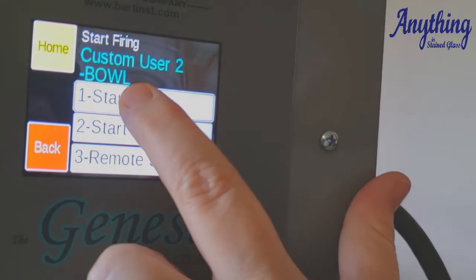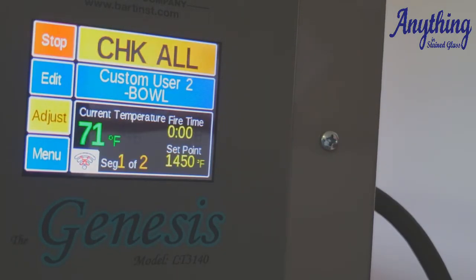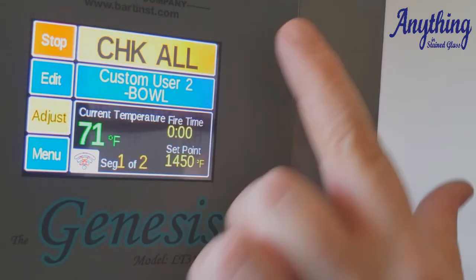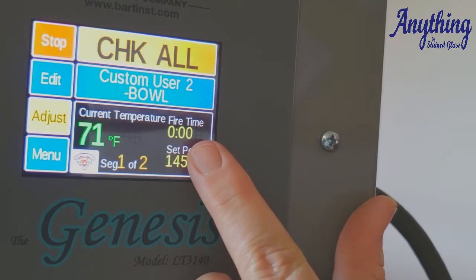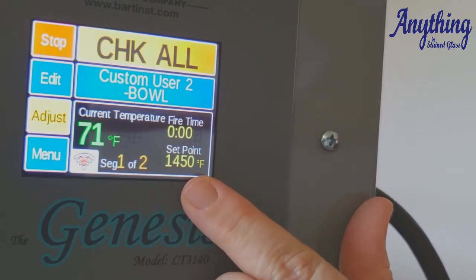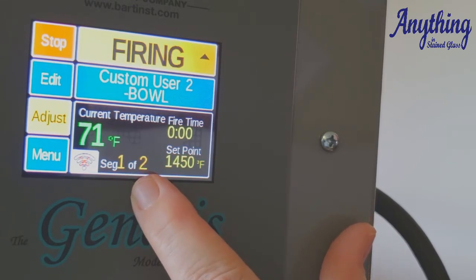Again, basic lockout from the factory is number 1. Now, down here, after it checks everything, down here, you can see what your current temperature inside your kiln is. You can see how long it's been firing. You can see what its target set point is and what segment of how many segments you're in.